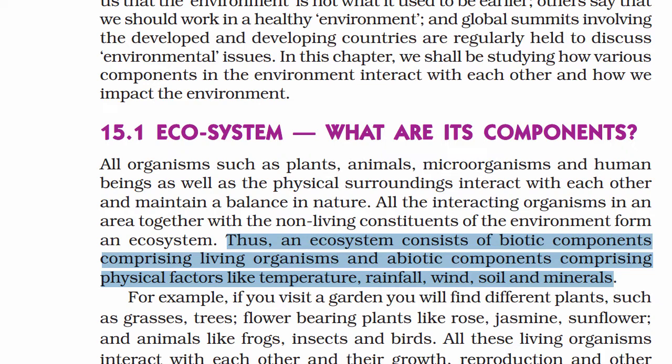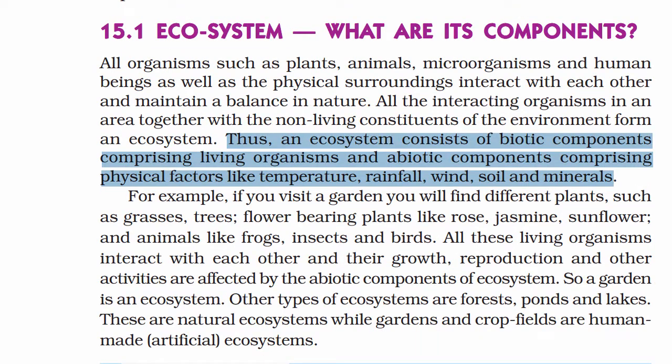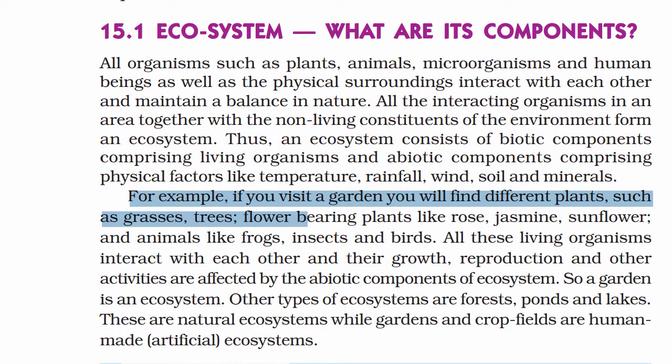This is the definition, and here is an example. You have a garden example. If you visit a garden, you will find different plants — grass, trees, flowering plants like rose, jasmine, and sunflower — and animals like frogs, insects, and birds.